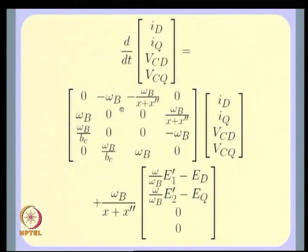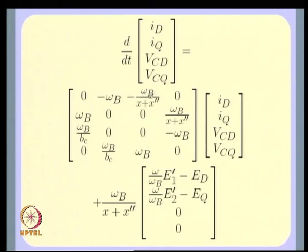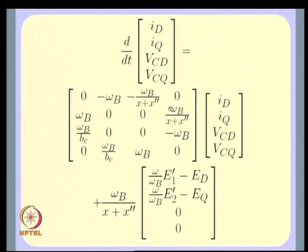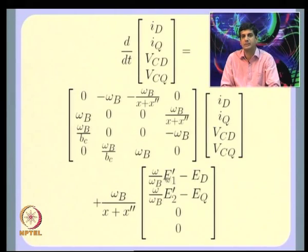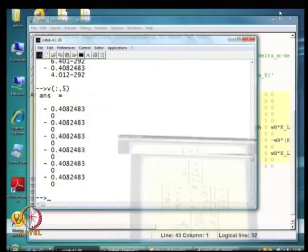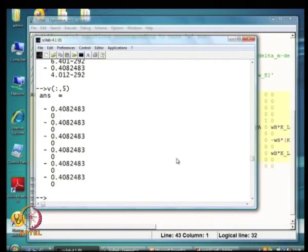Looking at this A matrix, there is a kind of skew symmetry. You notice minus omega_B and omega_B terms, and minus omega_B/(x_plus_x_double_dash) terms — note there is a minus sign for element (2,4). This is the state matrix corresponding to the electrical network looked at in isolation, with coupling to the mechanical system occurring because of certain terms.